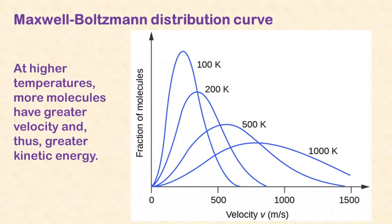At higher temperatures, molecules have a higher average kinetic energy. This Maxwell-Boltzmann distribution shows that at higher temperatures, more molecules are moving faster, and at lower temperatures, most molecules are moving more slowly.